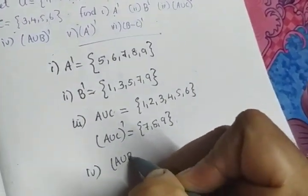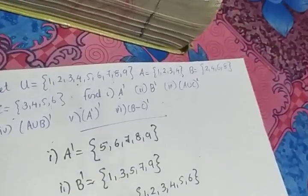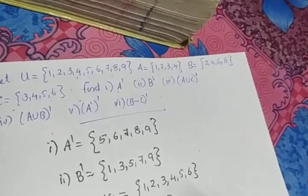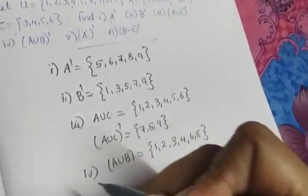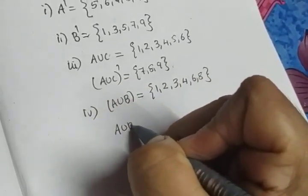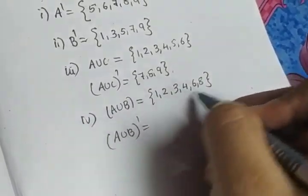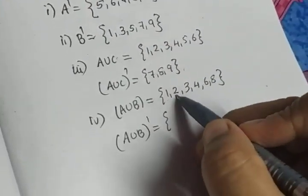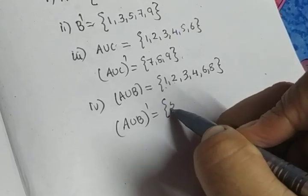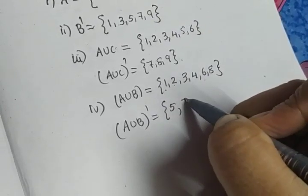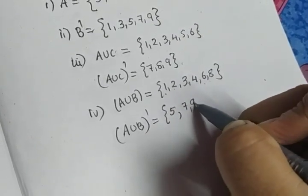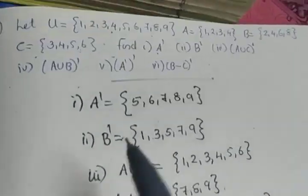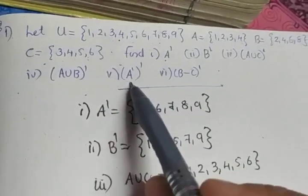The fourth part is (A union B) dash. First calculate A union B: A union B equals {1,2,3,4,6,8}. Now for (A union B) dash, strike off these elements from U. U contains 1 through 9; striking off 1, 2, 3, 4, 6, and 8, the remaining elements are {5,7,9}.